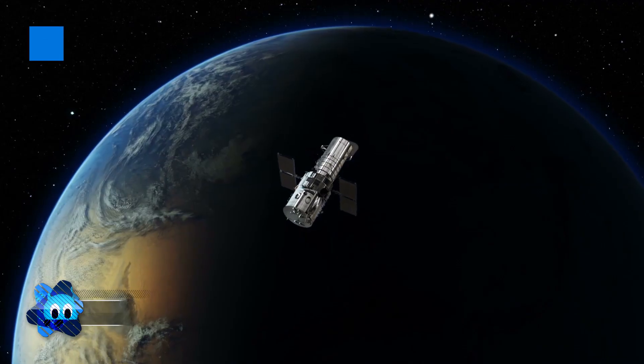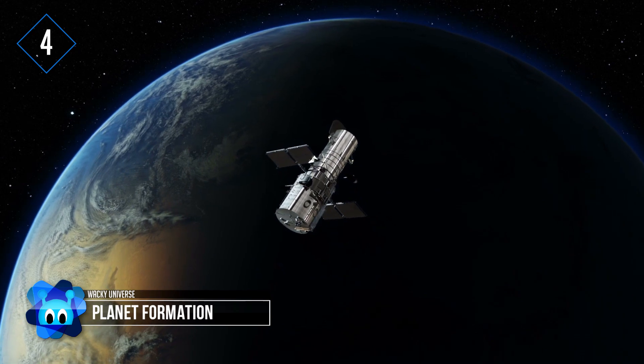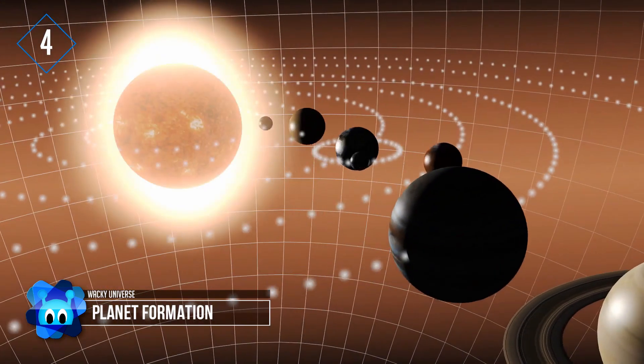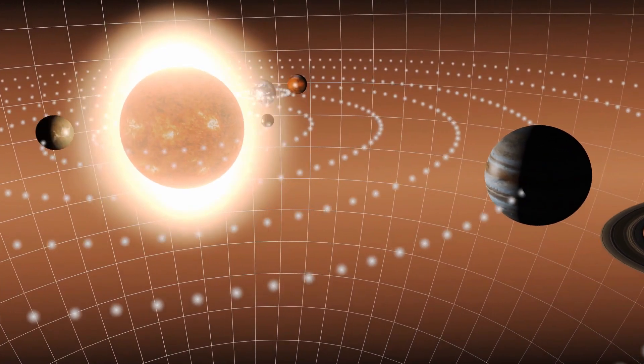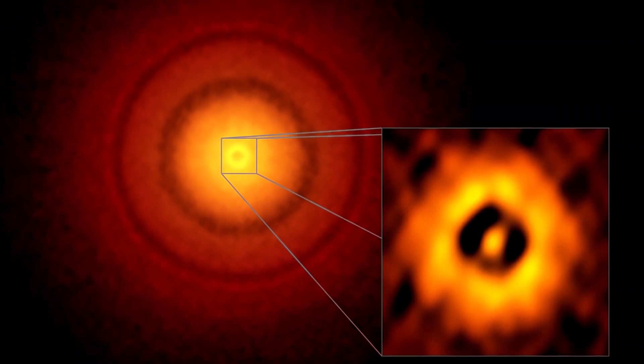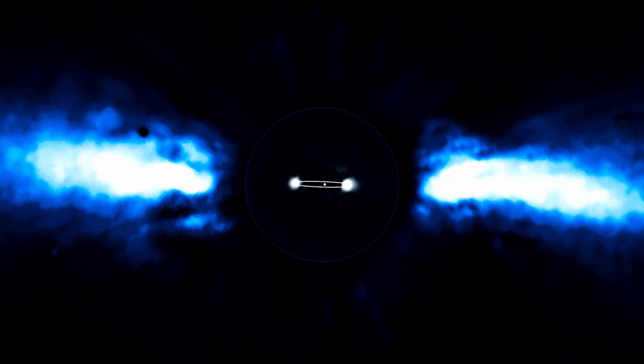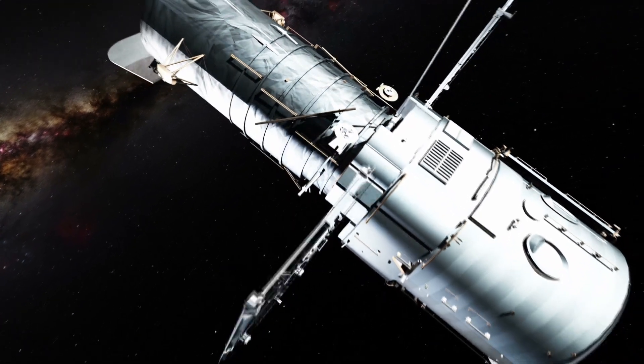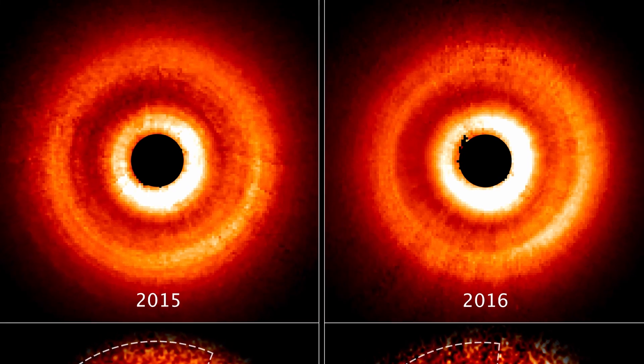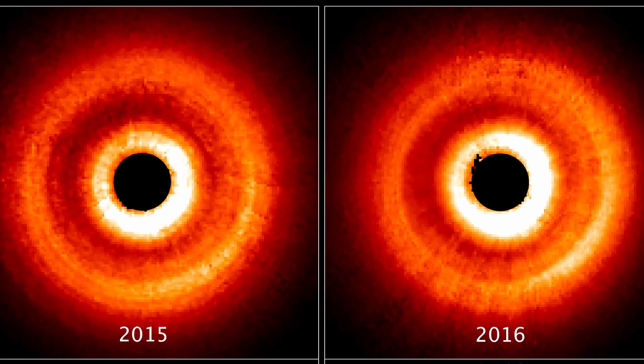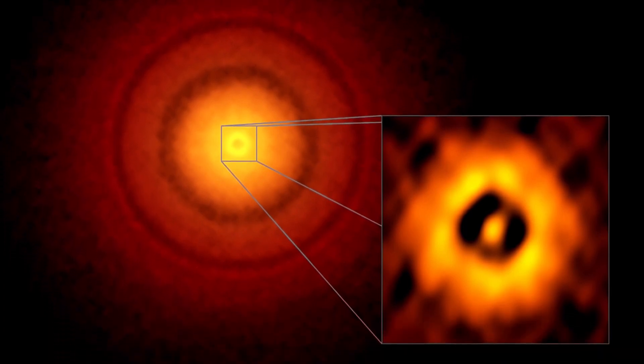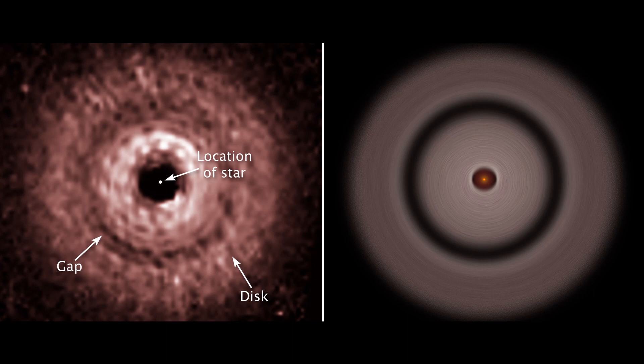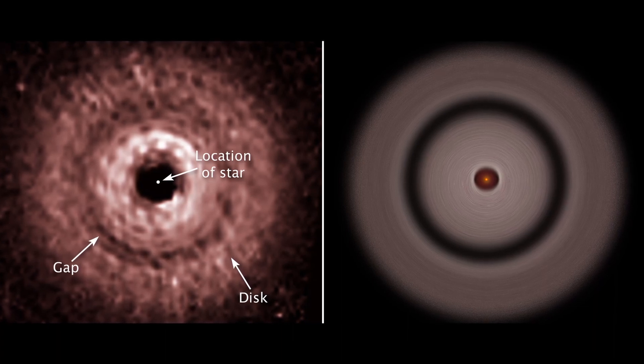The Hubble telescope never ceases to amaze astronomers and the rest of the world the longer it's in space. Another fantastic discovery by Hubble was how and where planets form. Two stars, Beta Pictoris and TW Hydrae, were the turning points for this observation. Scientists used a specialized mask on the telescope to block the bright light of TW Hydrae and found a large gap within the disk of dust and gas spinning around it. This star is 176 million light-years from Earth in the Hydrae constellation, and the gap within the disk is unusually far away from the Red Dwarf Star at 7.5 billion miles.